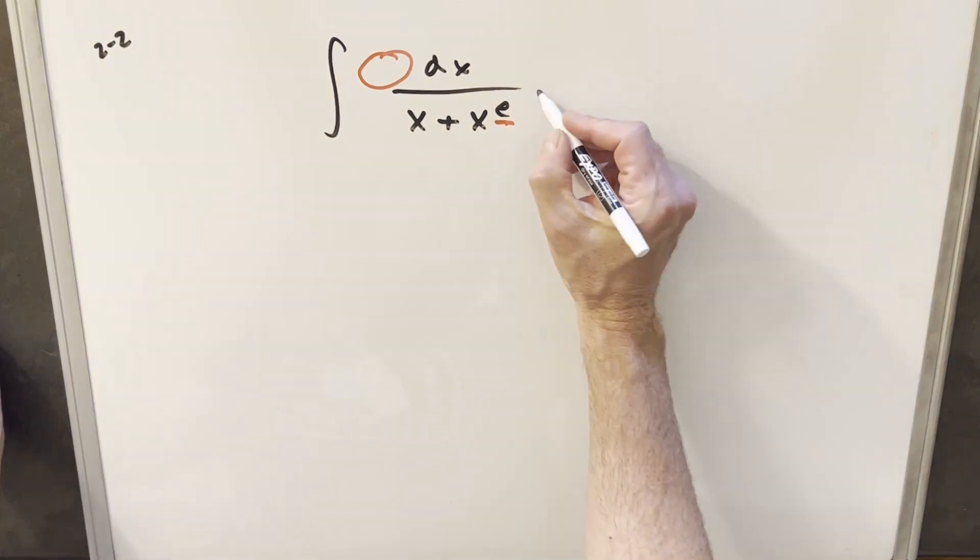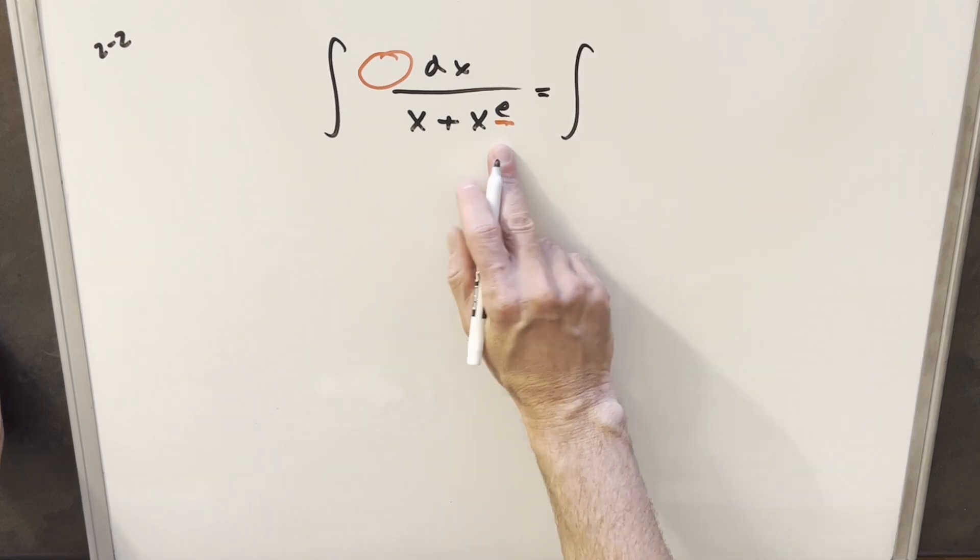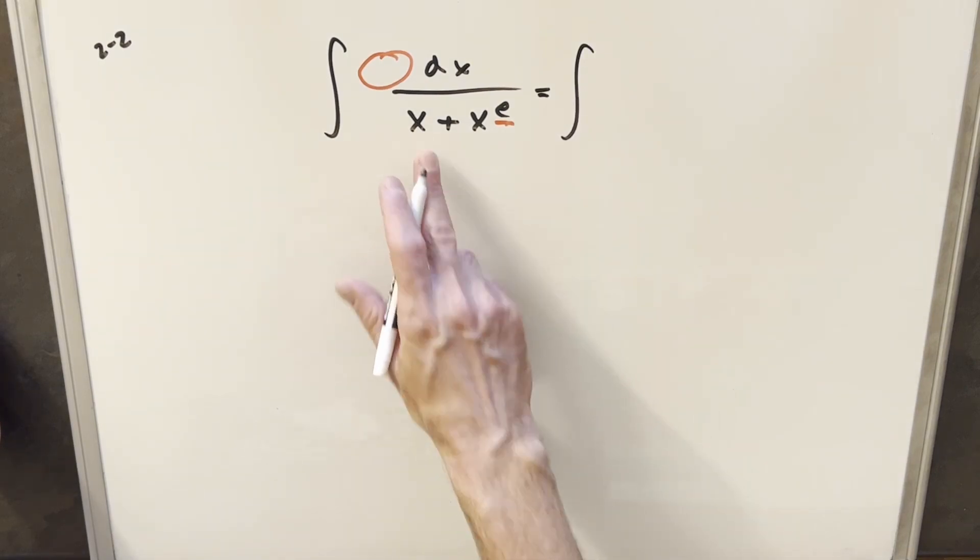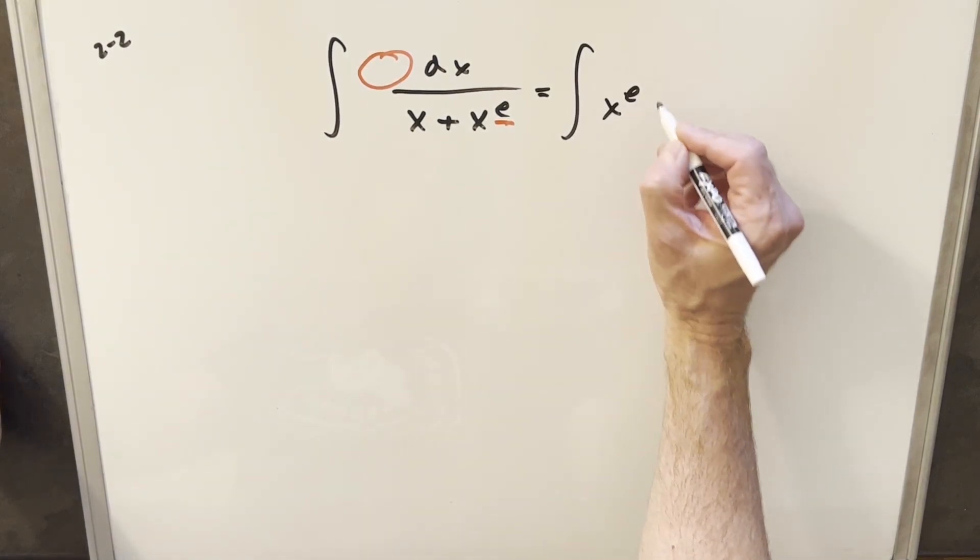So what I want to do is factor something out. It turns out I think this is going to work better if I factor out the x to the e rather than factoring out the x. So let's see what happens when I do that.